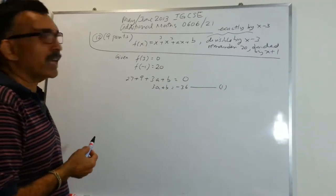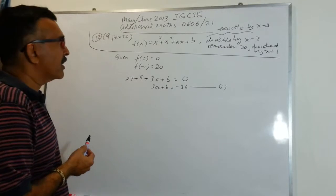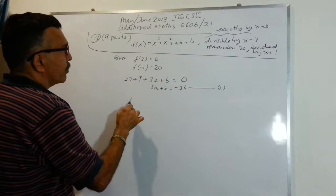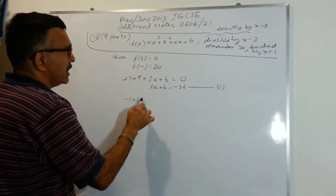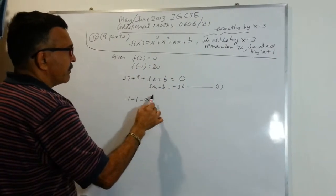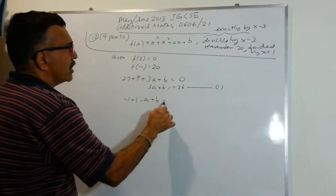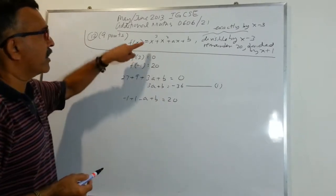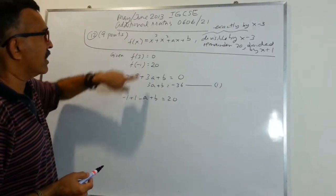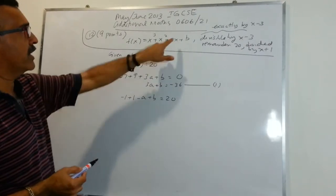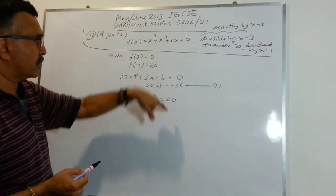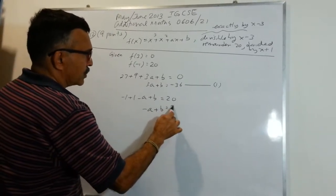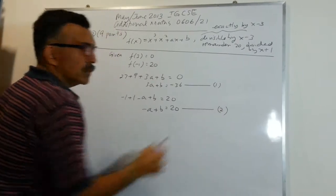Using the second condition, f(−1) = 20. Substituting: (−1)³ + (−1)² + (−1)a + b = 20, which gives −1 + 1 − a + b = 20. So we can write −a + b = 20 as equation 2.